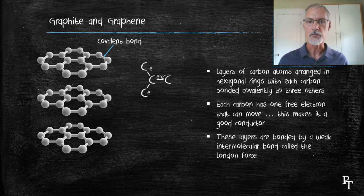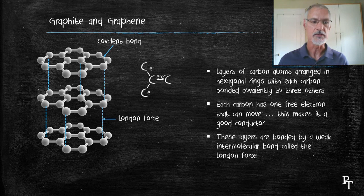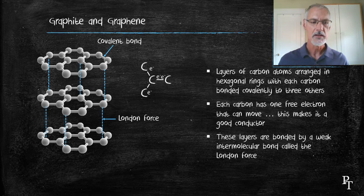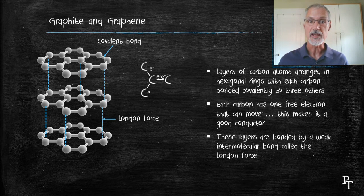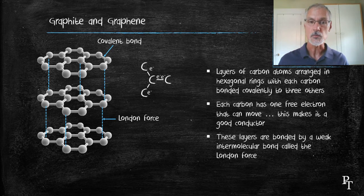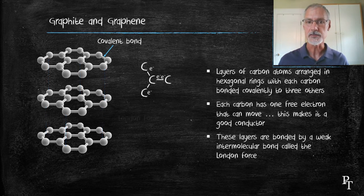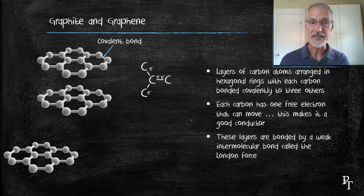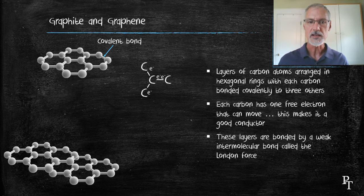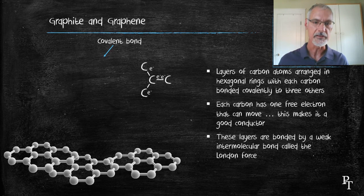These layers are held together by a weak intermolecular bond called the London force. So, when this substance breaks, it breaks usually the London force, because that's weaker, not the covalent bond. So for instance, when you write with your pencil, you're not breaking the covalent bonds in the sheets of carbon. You're breaking the weak London force that exists between the sheets.